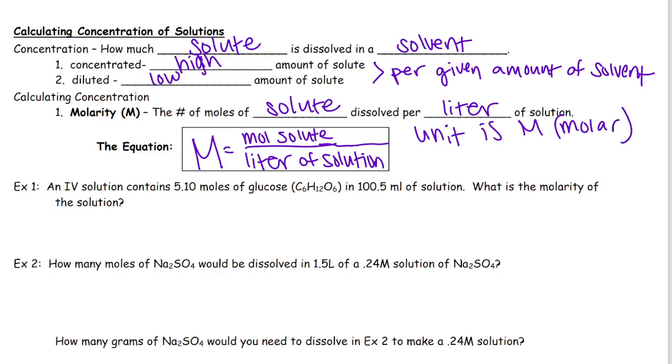So for example, if you had a 6 molar concentration of hydrochloric acid, it would be written like that, versus like 3 molar hydrochloric acid.